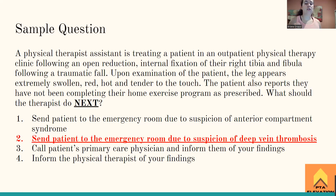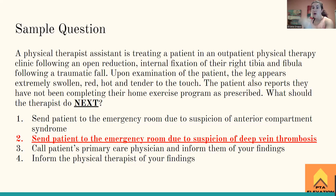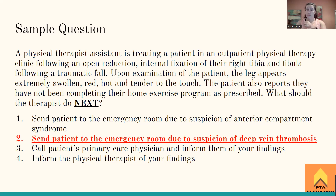The answer is number two — send the patient to the ER for suspicion of a deep vein thrombosis. The keywords are: extremely swollen, red, hot, and tender to the touch — all DVT indicators. The trick answer is to inform the physical therapist, but the PT might not always be available. The first step with a DVT is to treat it as a life-threatening emergency and get the patient to the ER immediately. Then document and inform others.